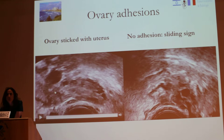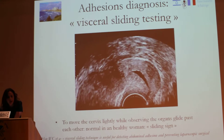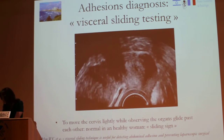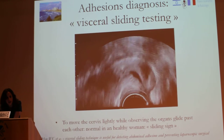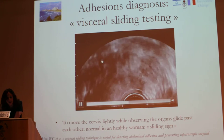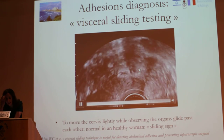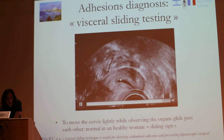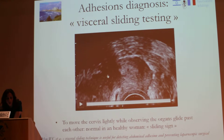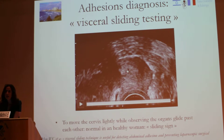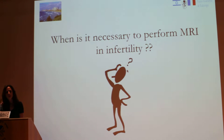It is very important to recognize the presence of adhesions. Here you have the visceral sliding test. You can see that here it is normal — there are no adhesions. The uterus is moving freely and there is separation between the rectal wall and the uterus, so there are no adhesions with the uterus.